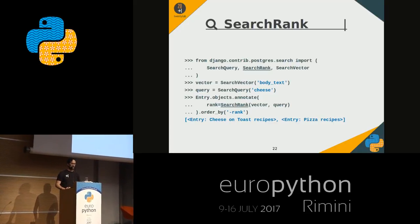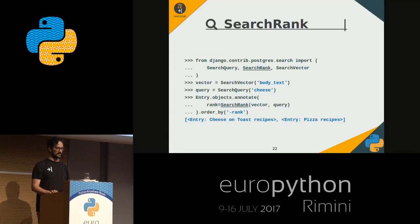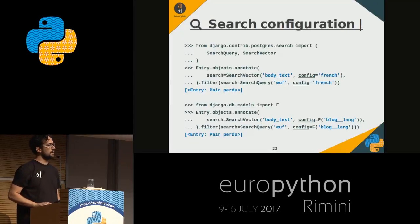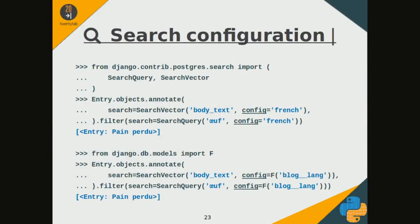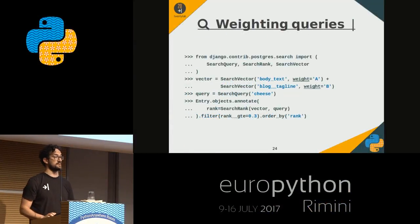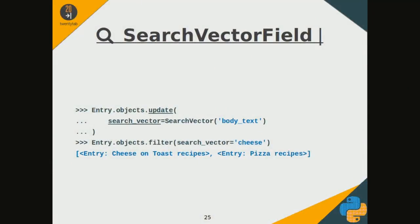We can use the Postgres rank to calculate the score of a document's relation to a search query, and we can use it to filter and sort results. We can set up the SearchVector to execute stemming and stop-word removal for a specific language, and we can get these languages from a class field. It's possible to set up the search to give different weights to various fields. We can also add a SearchVector field to the model to speed up the search — it's very fast — but we have to update this field manually, for example using Django signals or a Postgres trigger.